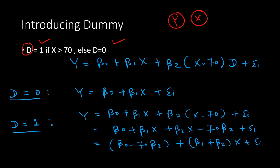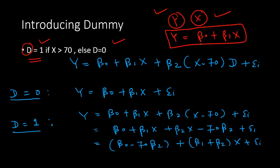What we'll do is introduce a dummy variable. We name it D, which takes a value of 1 if x is greater than 70, and 0 otherwise. Here x is the independent variable and y is the dependent variable. We start with the simple linear regression equation y = β₀ + β₁x and modify it slightly. We keep the first part and introduce a second term to the equation — another coefficient β₂ multiplied by (x − 70) times the dummy variable D.